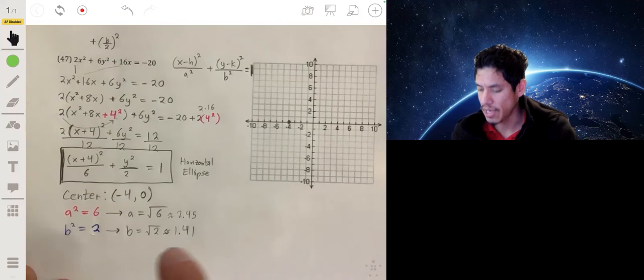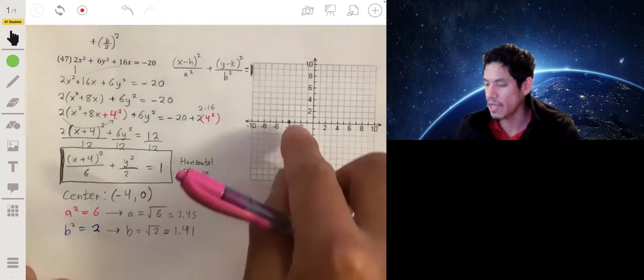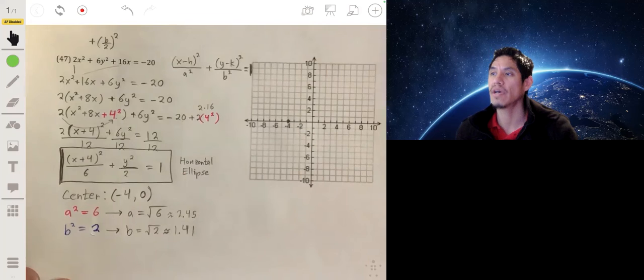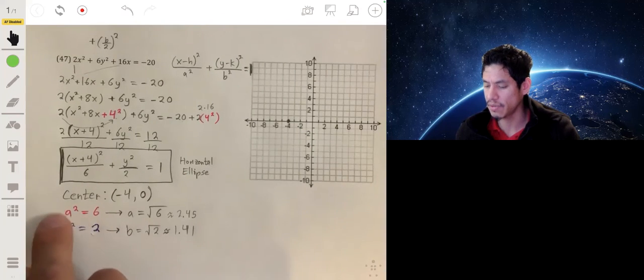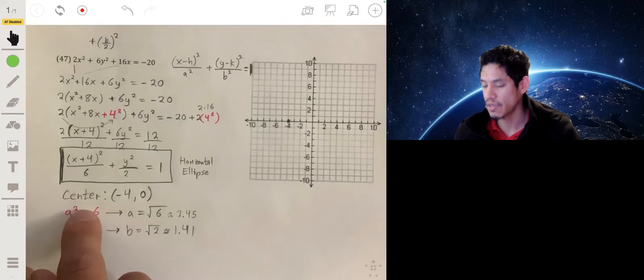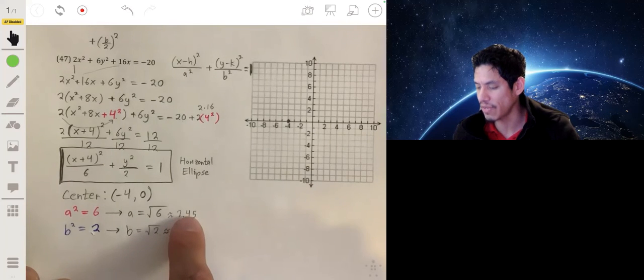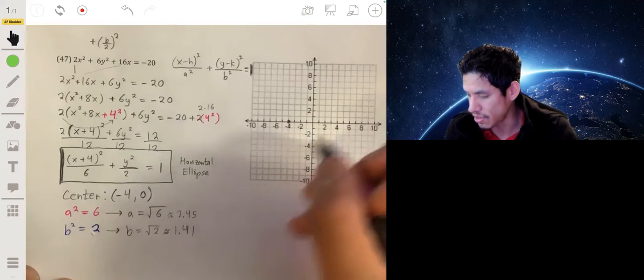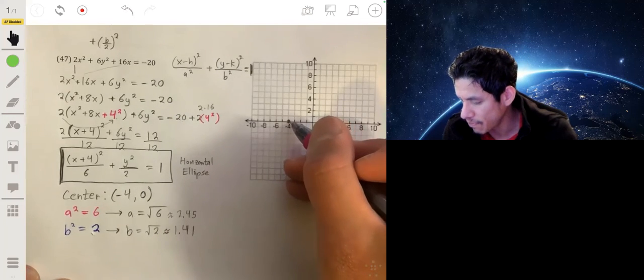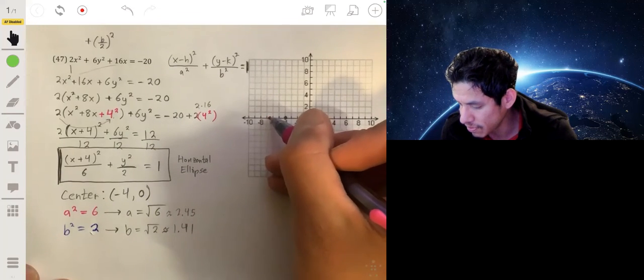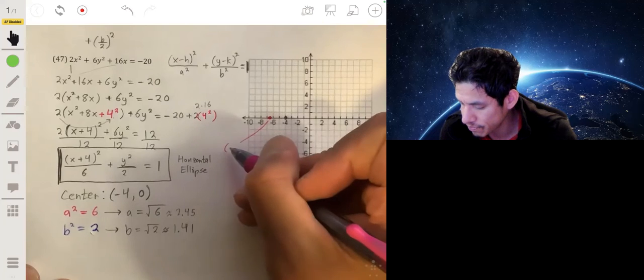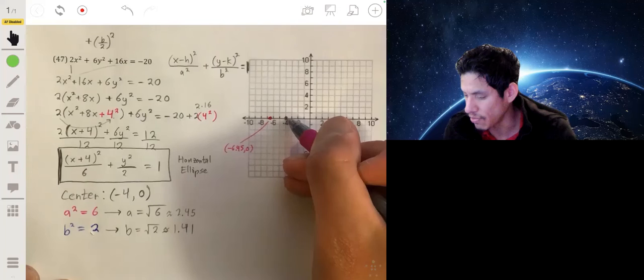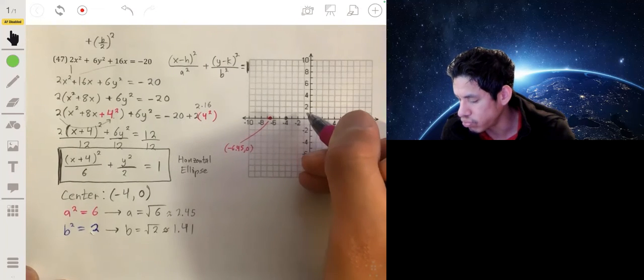Okay, so now the values of a and b tell me how far to the left and right and up and down from the center I can plot my vertices and co-vertices. So the vertices are going to be 2.45 units to the right and left of the center. So 2.45 to the left would be like negative 6.45, and then 2.45 to the right of negative 4 would be negative 1.55.